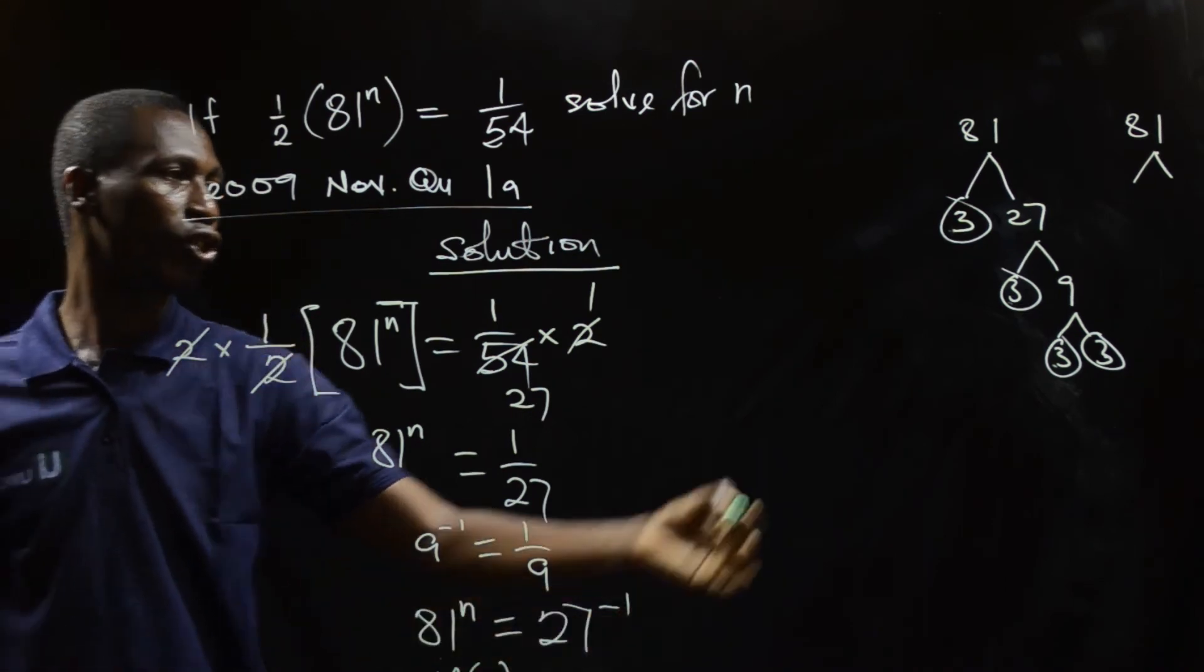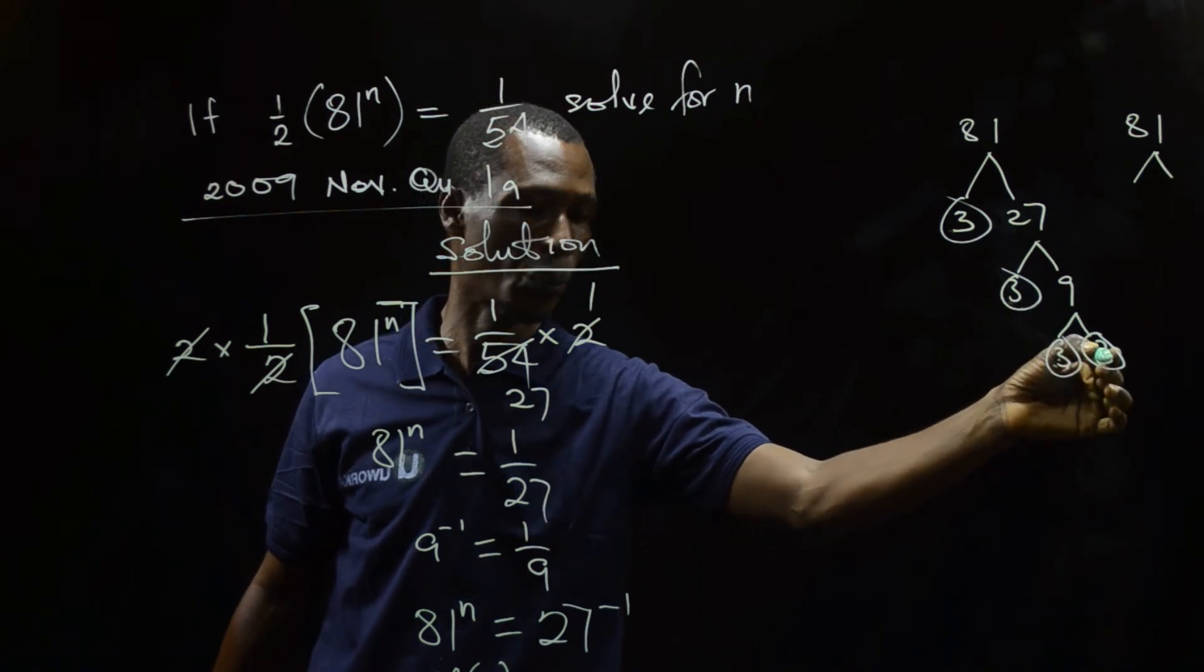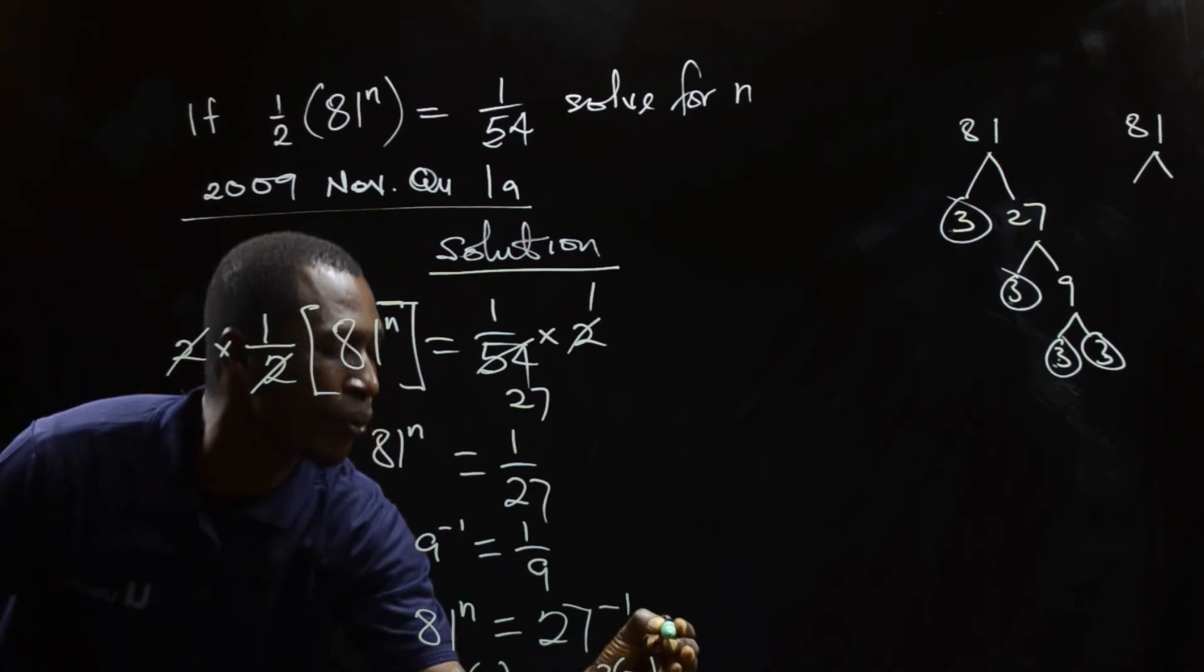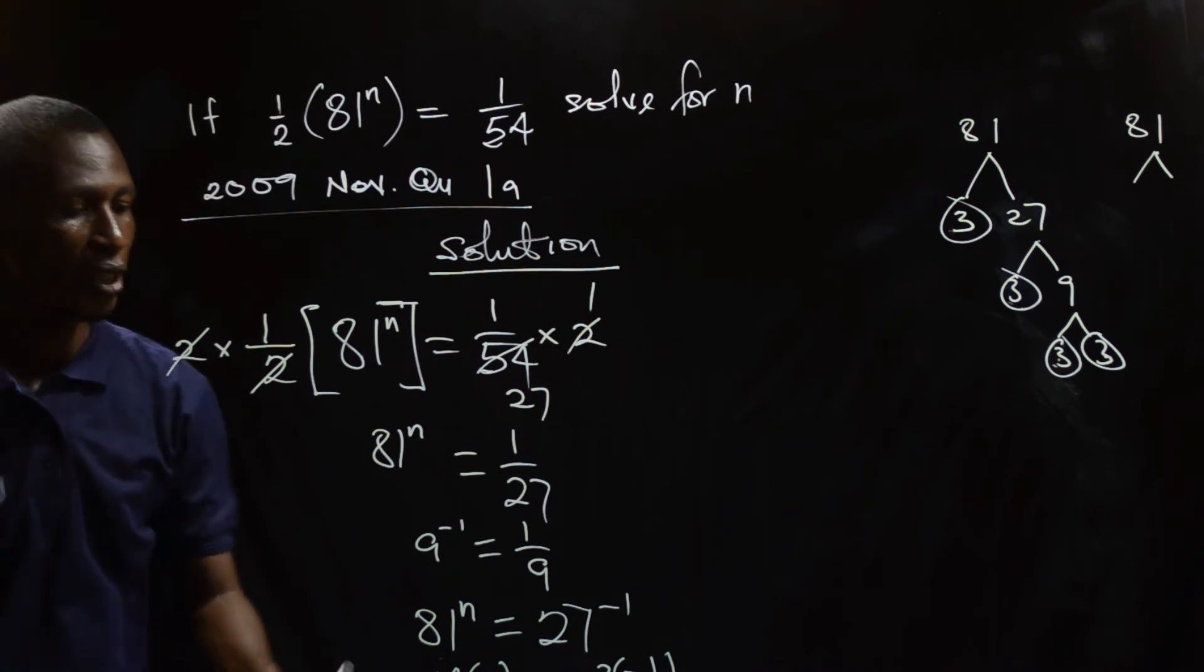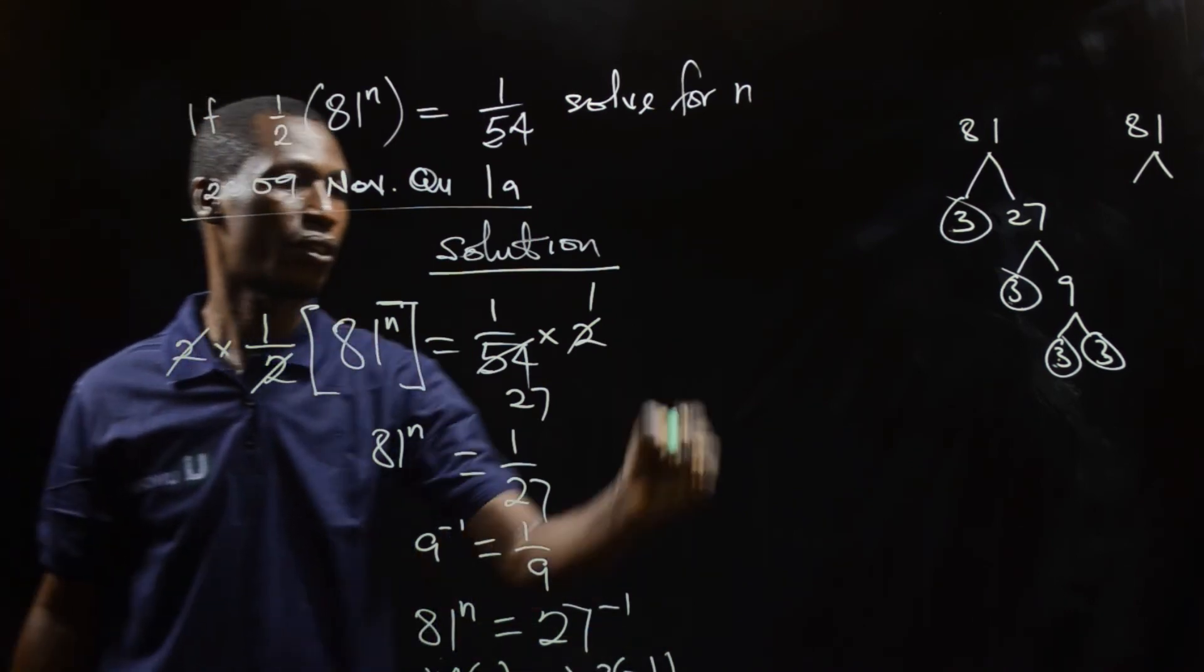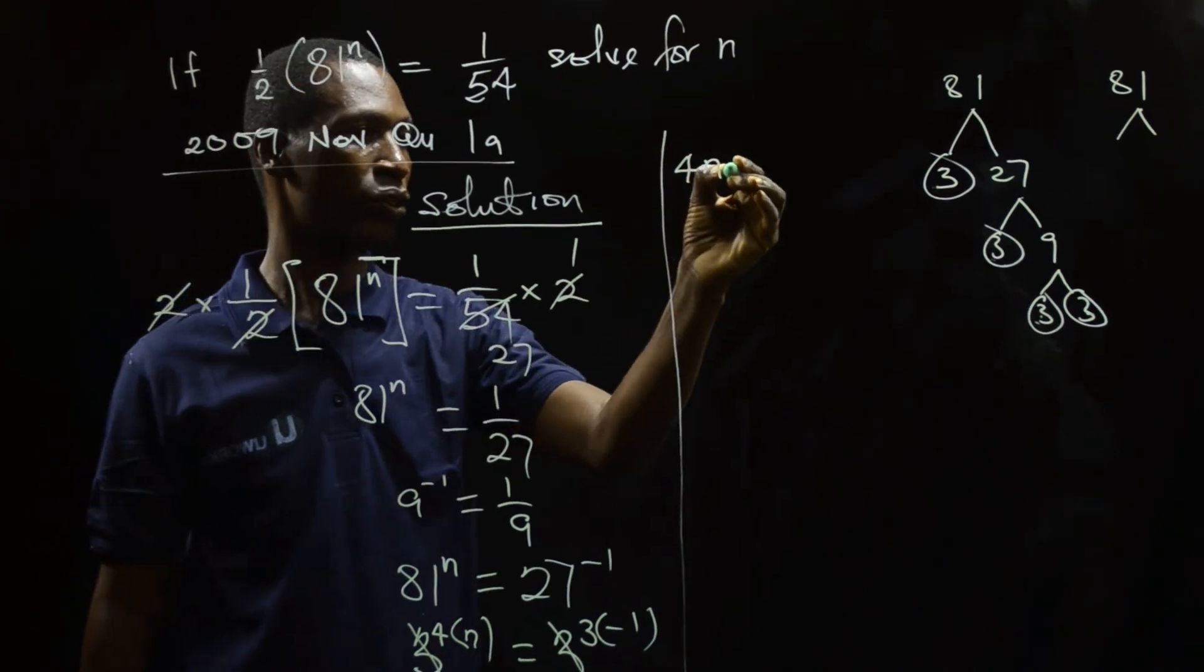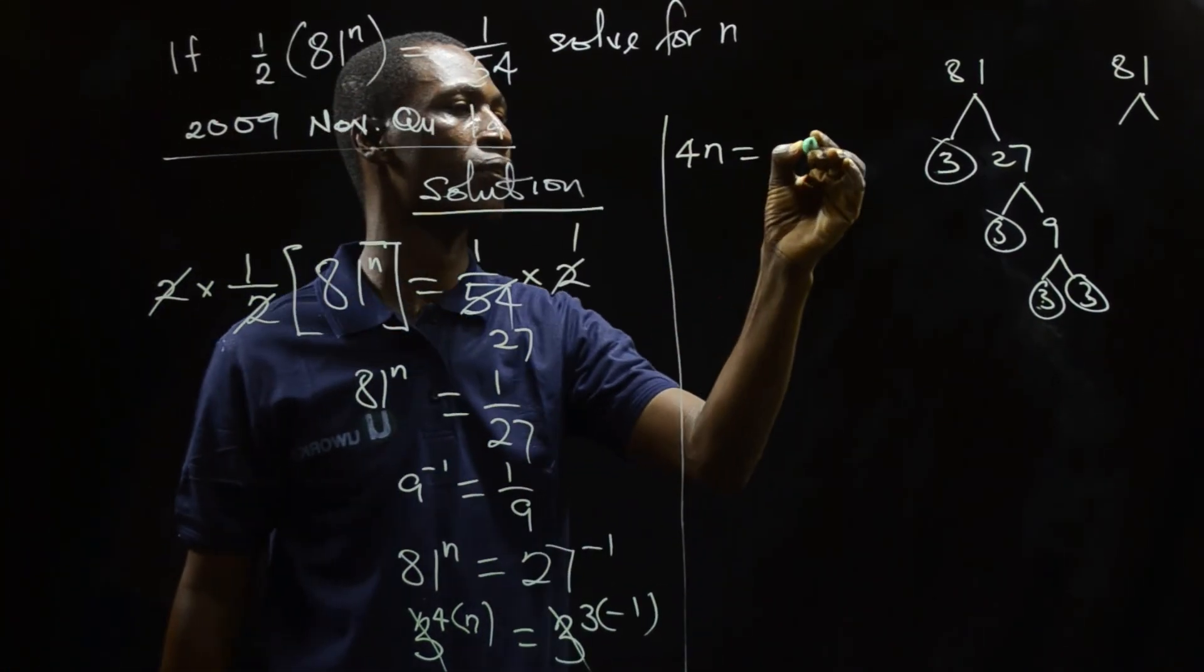Then 27. You know 27 is here. And 27, we had how many 3s? 1, 2, 3. So I'm also going to get 3 to the power 3, negative 1. At this point, what we can do is that we equate the base, leaving, creating a space here, 4n to be equal to 3 times negative 1 is going to give me minus 3.